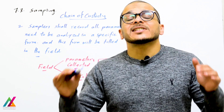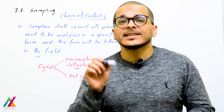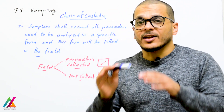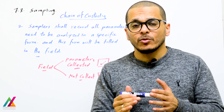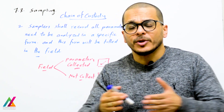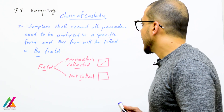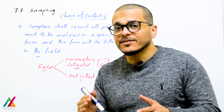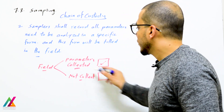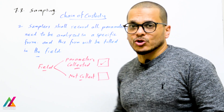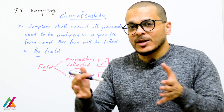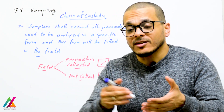To organize your work, you shall record this in a specific form to be filled in the field. Samplers shall record all parameters to be analyzed. In the field, if you collect a specific parameter, you check it off; if not collected, you leave it empty. When you return to the lab, you will know how many samples were collected and what parameters need to be analyzed for each sample.